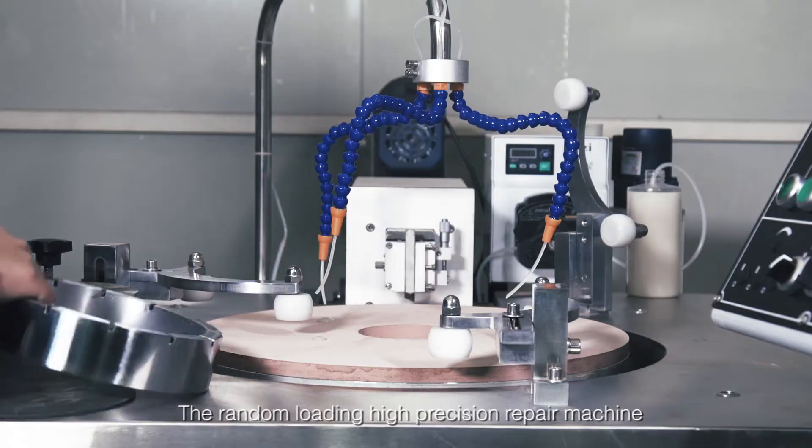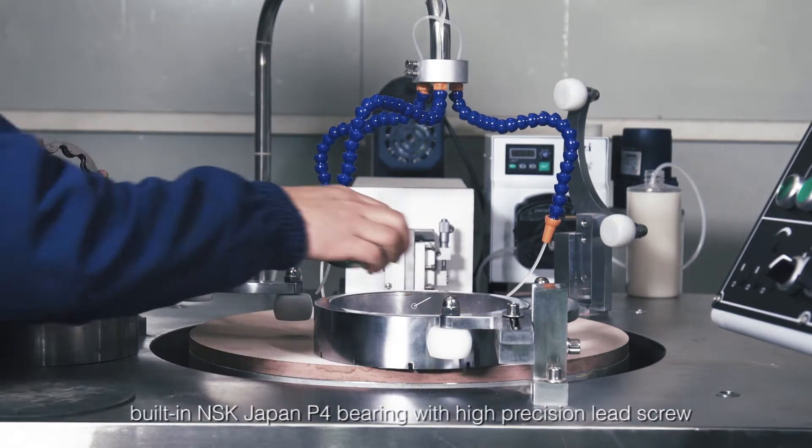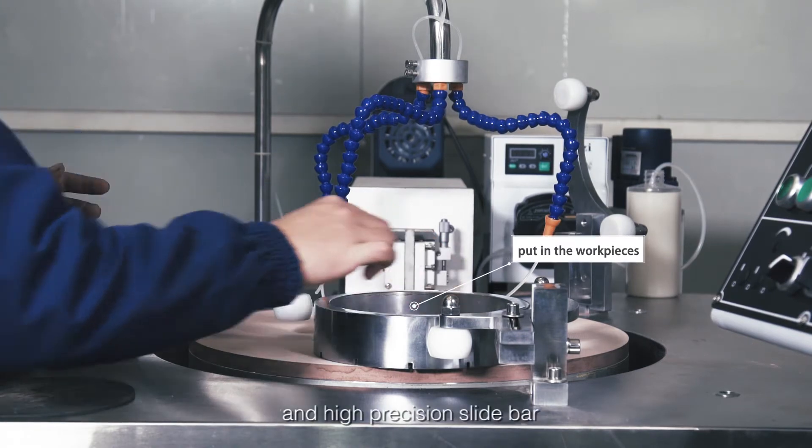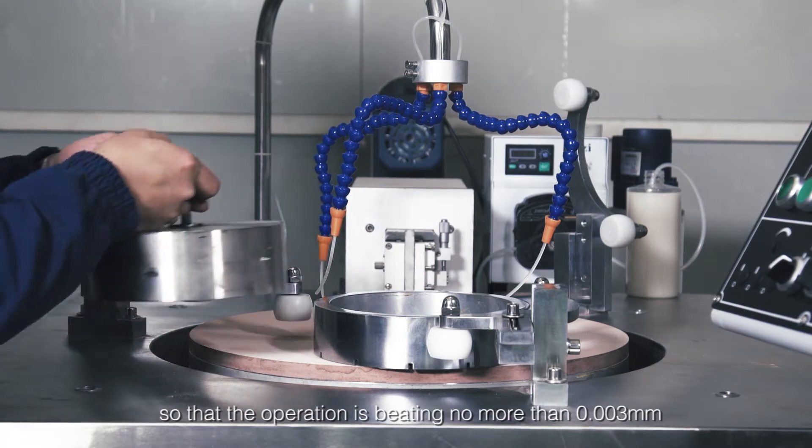The Random Loading High Precision Repair Machine built-in NSK Japan P4 bearing with high-precision lead screw and high-precision slide bar so that the operation is beating no more than 0.003 mm.